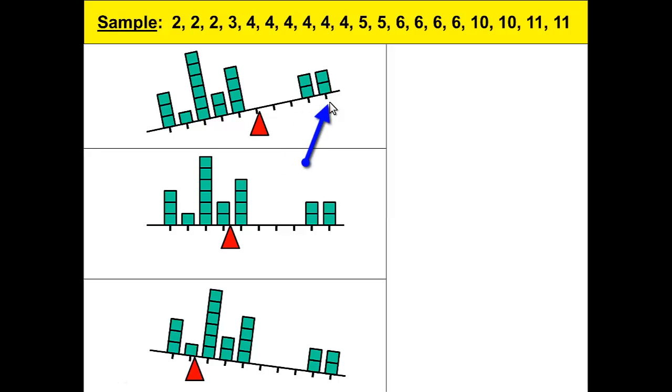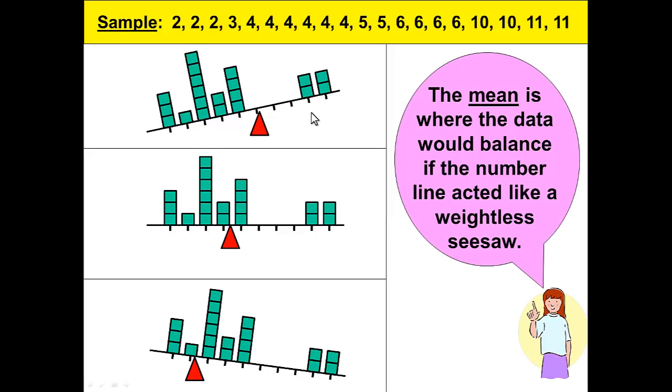Each graph is the same except where the red triangle is located. Which of these shows a triangle at the balance point? Where does it balance? The mean is where the data would balance if the number line acted like a weightless seesaw. Imagine a seesaw that balances out.